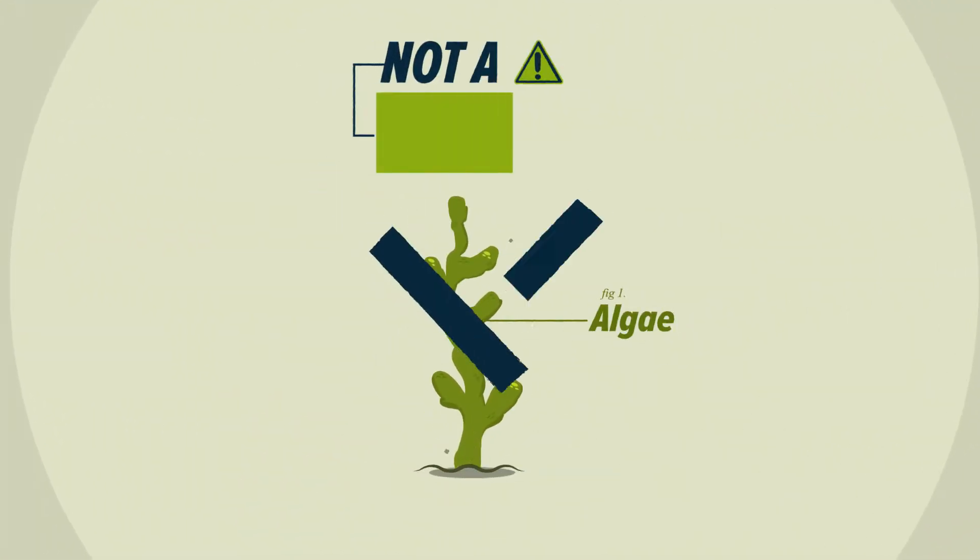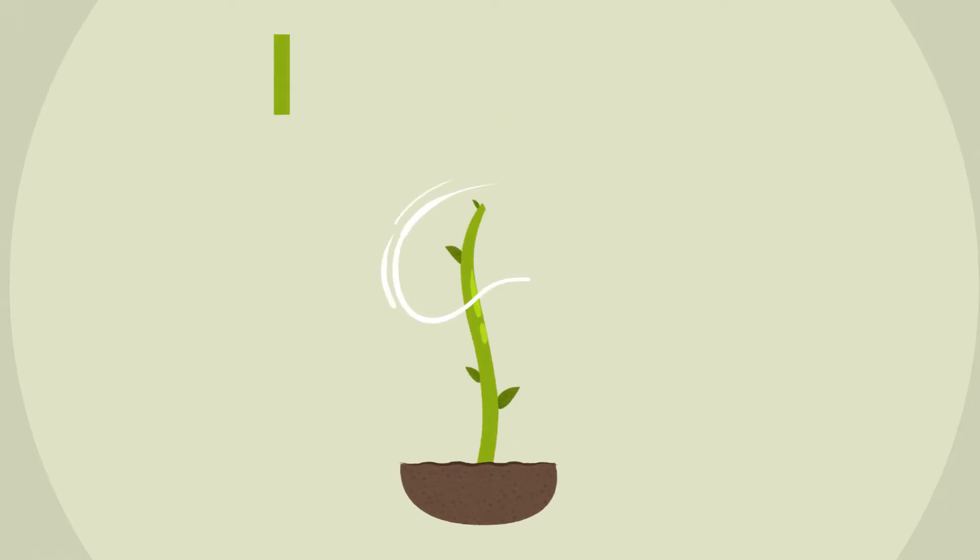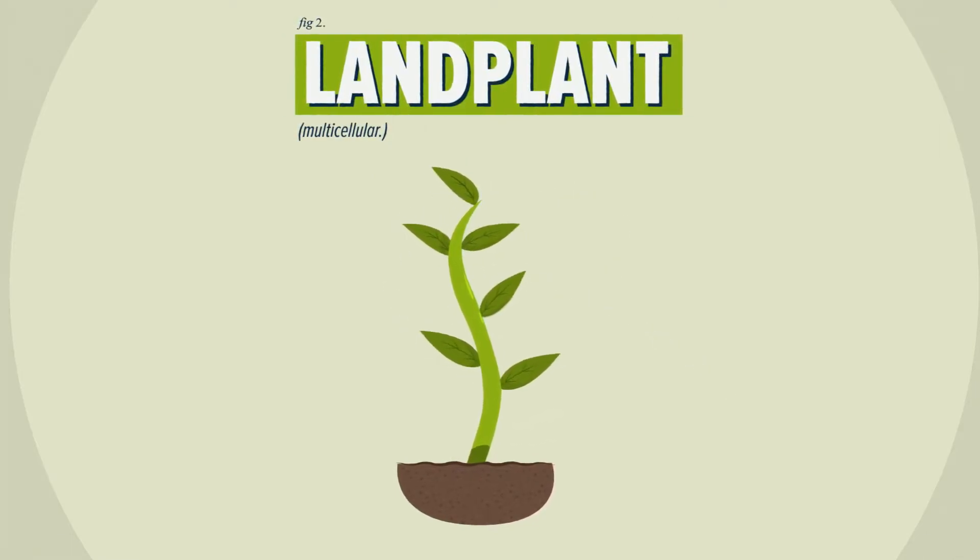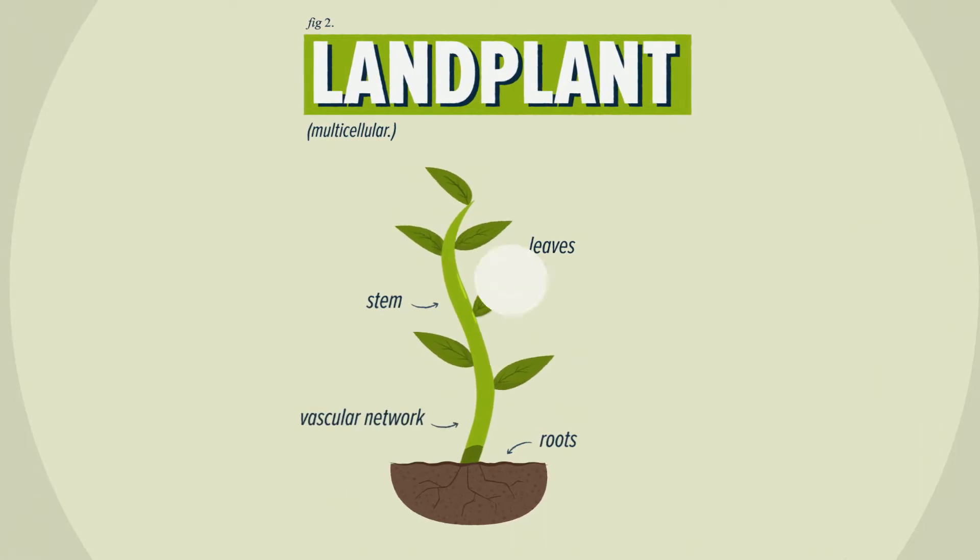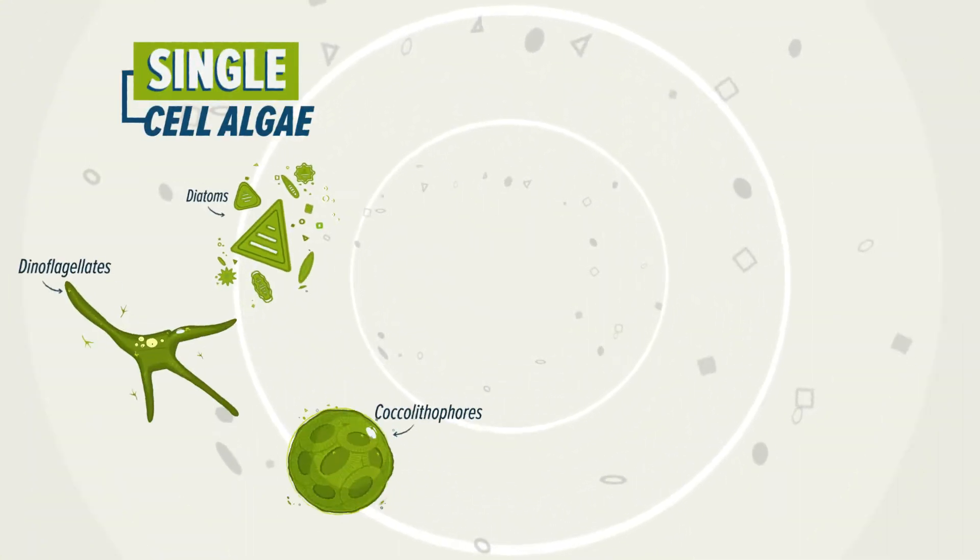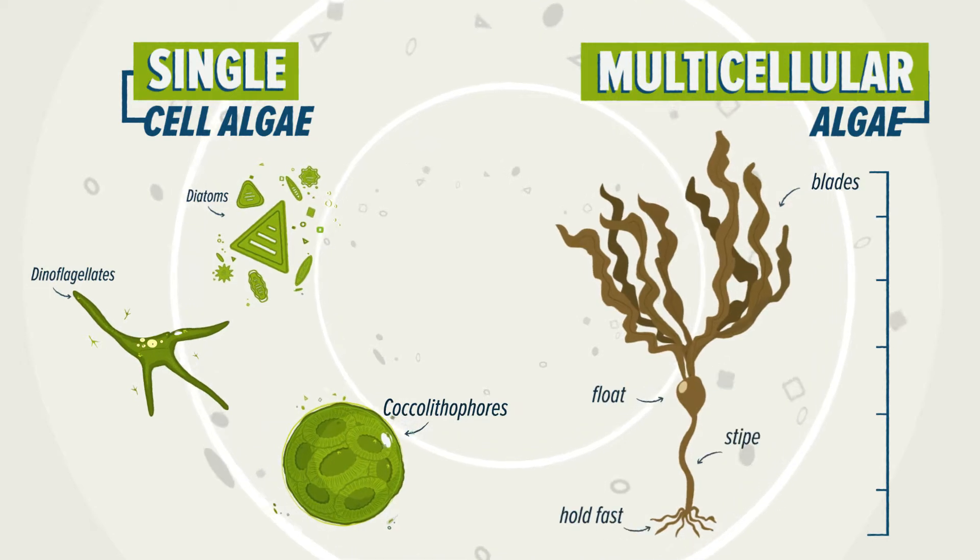Algae and plants are not the same. Plants are multicellular. Their cells form roots, leaves, stems and a vascular network. Algae, on the other hand, have a fundamentally different organization of cells.